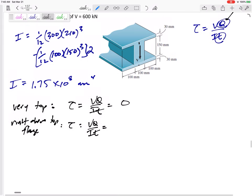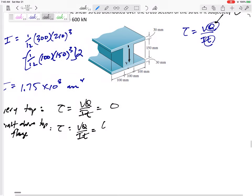600 kilonewtons, I'm going to do 600,000 newtons. The Q, alright, so Q is y bar prime A prime. Y bar prime, I'm going to come back to the A prime would be the area